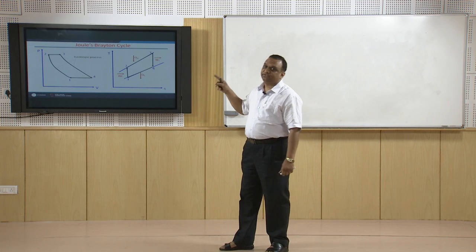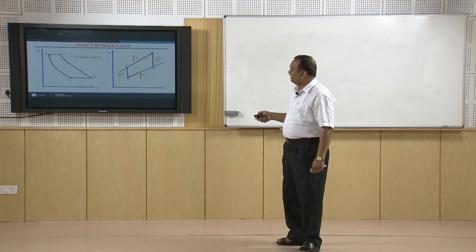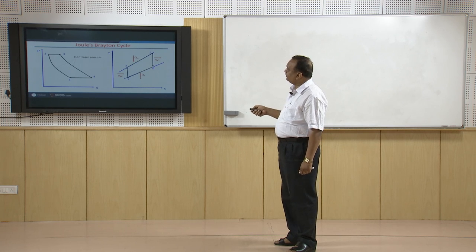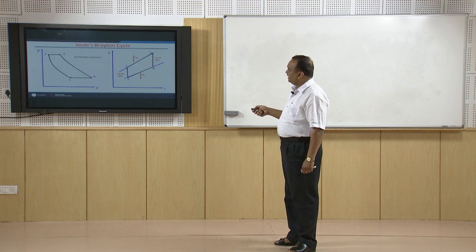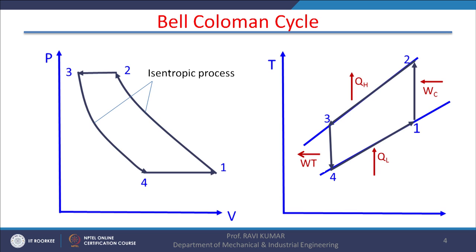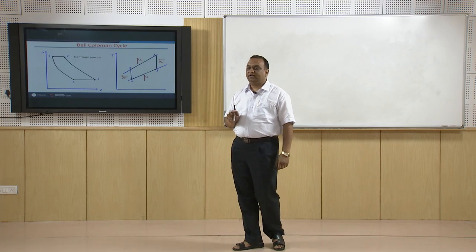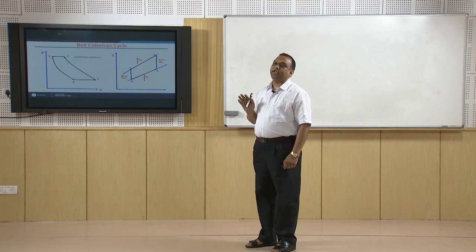If we reverse this cycle — instead of expansion in process 3 to 4, compression in process 4 to 3 takes place — then compression, heat rejection, 2 to 1 expansion, and 1 to 4 heating. This becomes the reverse Joule-Brayton cycle, also called the Bell-Coleman cycle or Bell-Coleman air refrigeration cycle. It is called an air refrigeration cycle because air is the working fluid or refrigerant.